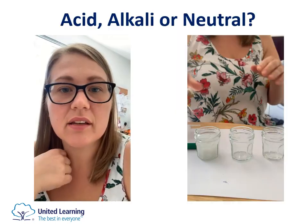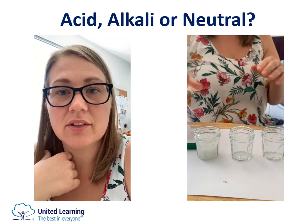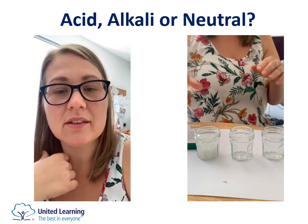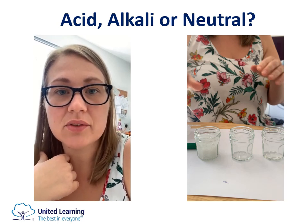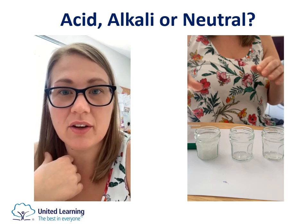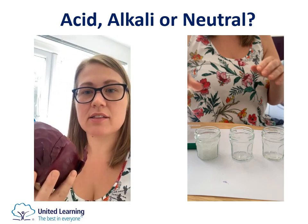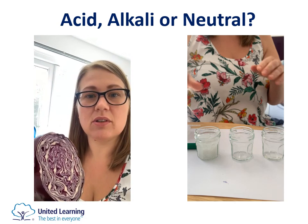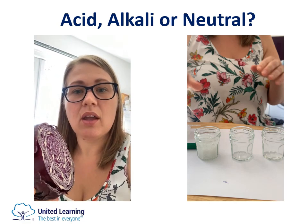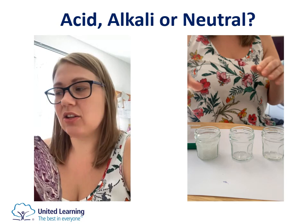There are three categories of chemicals: acids, alkalis, and neutrals. You can decide whether something is an acid, alkali, or neutral by using an indicator. At school we'll use litmus paper and universal indicator, but you won't have those at home. What you could get quite easily is a red cabbage — chop some up, boil it in a pan for a while (ask parents for help), and once you've boiled it you'll see the water has become purple. That's the indicator you can use.